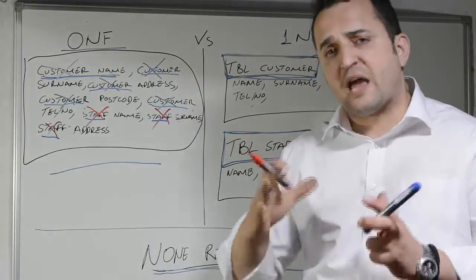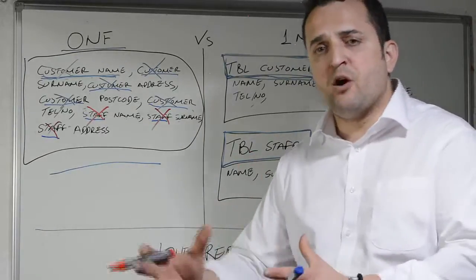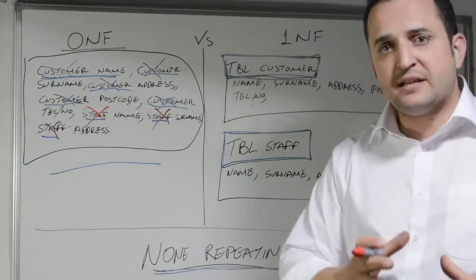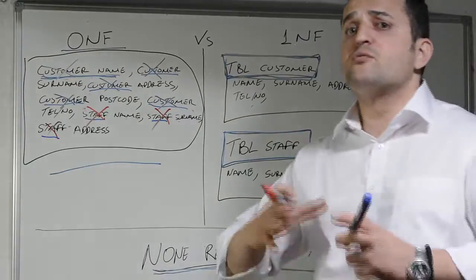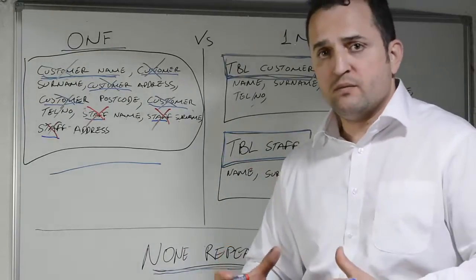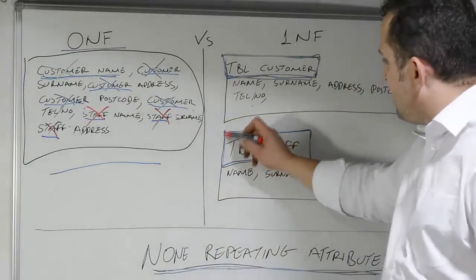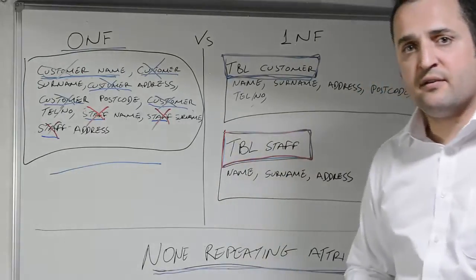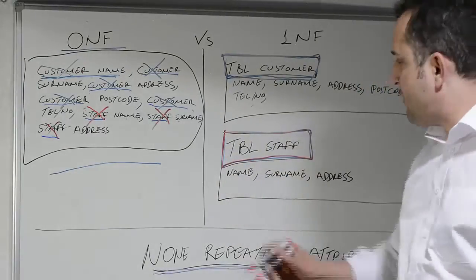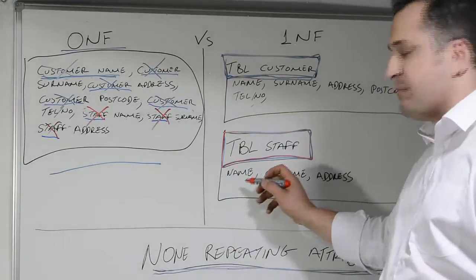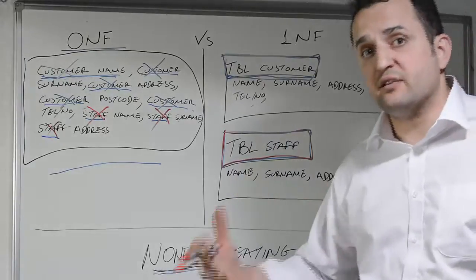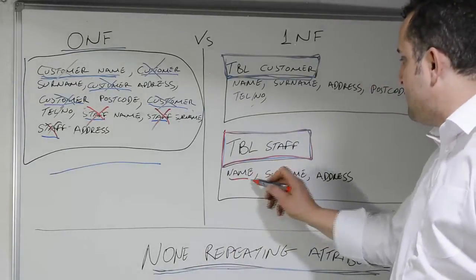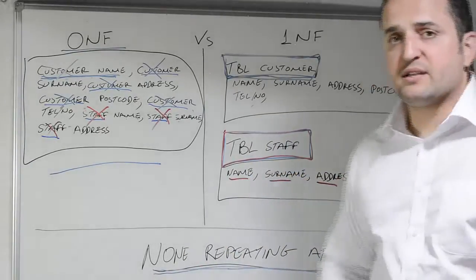Again, the repeating attribute is crying out loud: 'Pick me up, I don't belong here, I belong into my own entity, I belong into my own table.' Therefore, we create a new table called tbl_staff, and we put these attributes — otherwise known as field names — there: name, surname, and address.